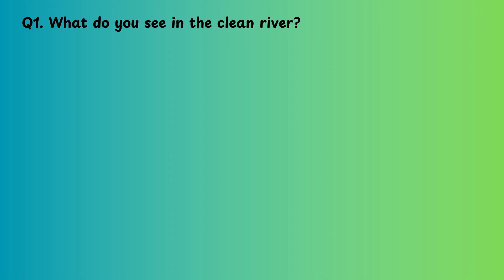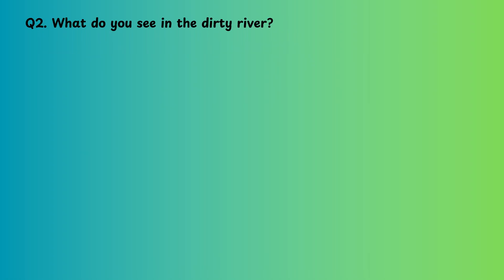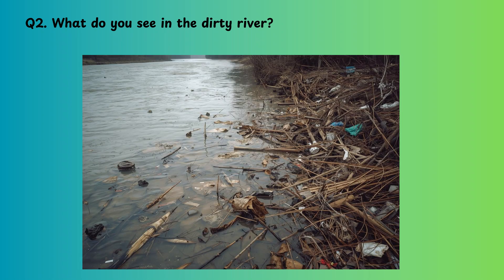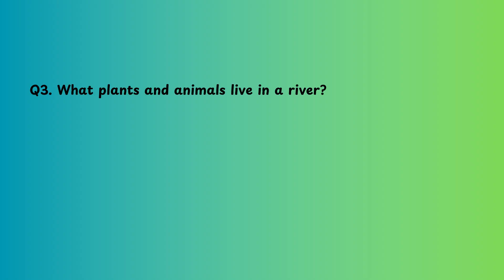Question one: What do you see in the clean river? Clean water with visible rocks and stones. Question two: What do you see in a dirty river? You can see garbage and twigs from trees.